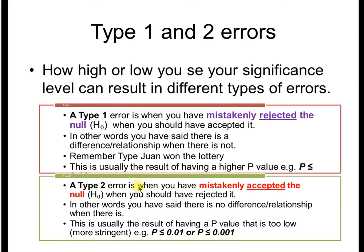A type 2 error is when you think there's no effect, no difference, no correlation, when in fact there is. In other words, you accept the null hypothesis and say there's no difference when actually there was a difference. Ask yourself, pause it, maybe have a think about it. Which of these has more severe consequences? A type 1 or a type 2 error?